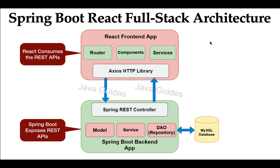Let us take a look at some of the key components and their roles in this architecture. In the Spring Boot backend application, we create a three-layer architecture: the controller layer, service layer, and DAO layer. The DAO layer is responsible for talking with the database, the service layer contains the business logic, and the controller layer contains the Spring MVC controllers which expose the REST APIs.